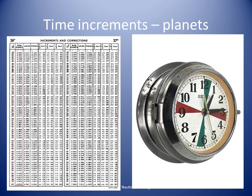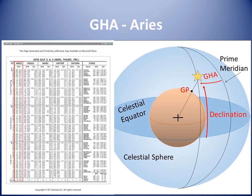Aries, or the first point of Aries, is the location of the vernal equinox, used as a reference point in celestial coordinate systems. In celestial navigation diagrams, Aries is often indicated with the horoscope symbol. In its role as a reference point, no declination information is given for Aries.